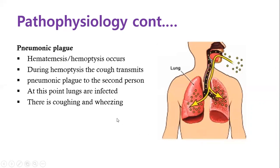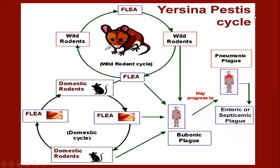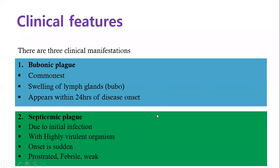To summarize the cycle: there is a sylvatic cycle rotating among wild animals, and a domestic cycle where fleas bite domestic animals. The fleas can then bite humans, leading to bubonic plague, which progresses to septicemic plague in the blood, and then pneumonic plague in the lungs, after which transmission via coughing continues easily.